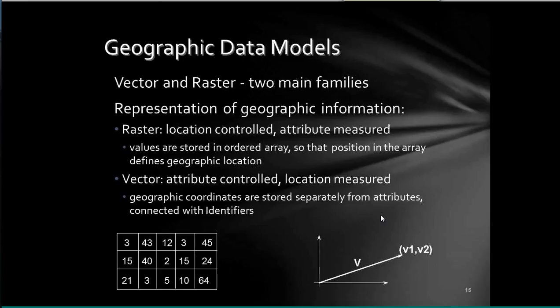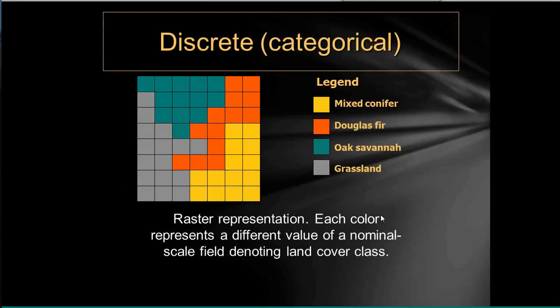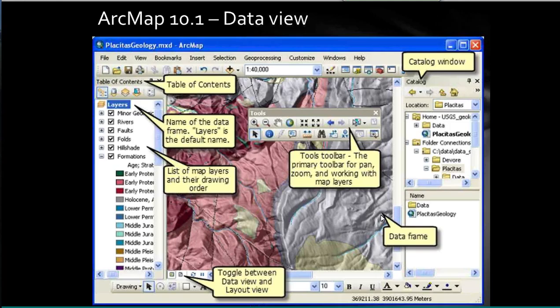Two main geographic data models: vector and raster. Vectors are points, lines, polygons; rasters are images. Here's this discrete Douglas Fir example — Douglas Fir owns these pixels. I can select Douglas Fir and those pixels highlight, then do something with those selected pixels. It's kind of a twist on how you think of rasters, but it's really handy.